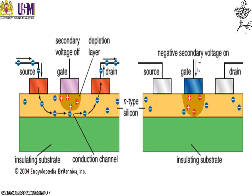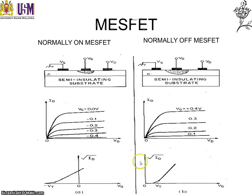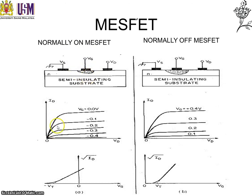The resulting IV characteristics are similar to the JFET device, as you can see here. For the normally-on MESFET, there is a conducting channel with current flowing when the gate voltage is off. As you increase the drain voltage, it reaches pinch-off and the current saturates. As you apply a negative bias, you restrict the flow, so pinch-off occurs earlier — just like in JFETs. The more negative you go, the earlier the pinch-off occurs.